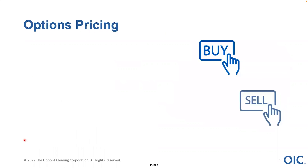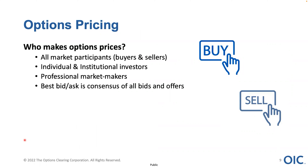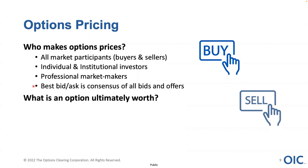So, options pricing — this is going to be a recap. Who makes options prices? When you look at your options montage and see different bids and offers, different strikes in different months, all those prices are certainly not random. They are the collective market for anybody participating in that option at any given time — that could be individual retail investors, institutional investors, hedge funds, banks, pension funds, or professional market makers who make a two-sided market and facilitate order flow for the public.